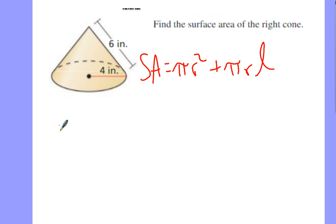So in this case, the surface area will be π times 4² plus π times still 4 times our slant height of 6.